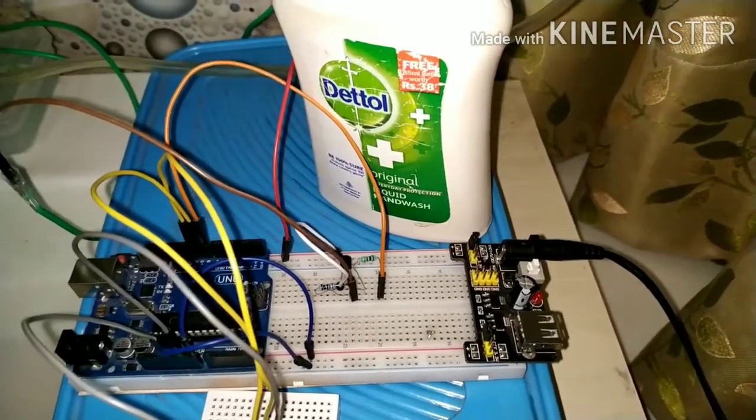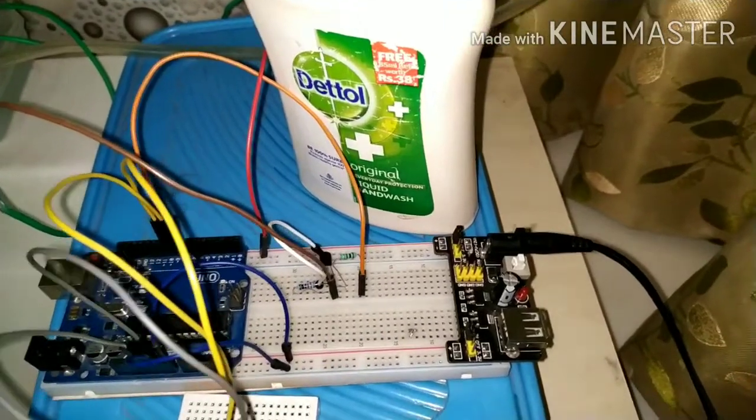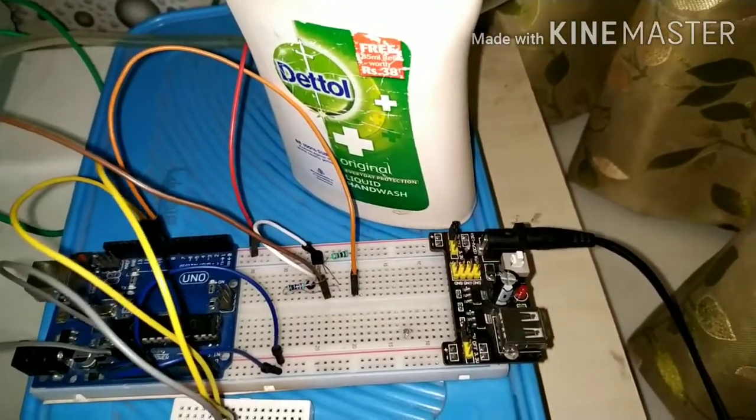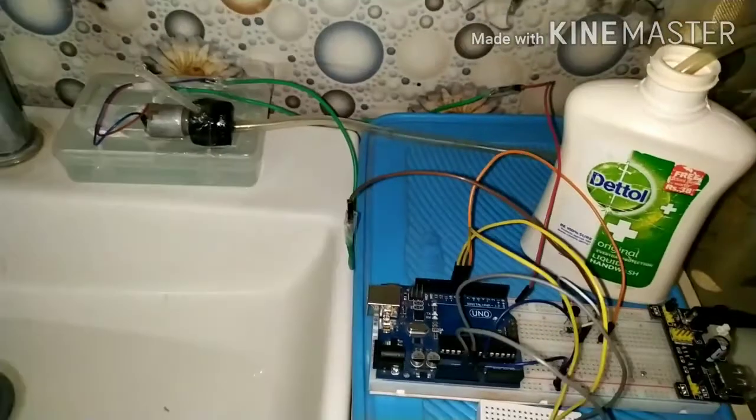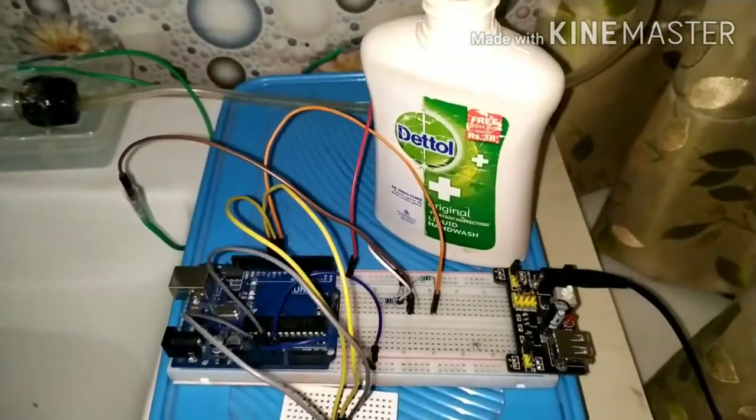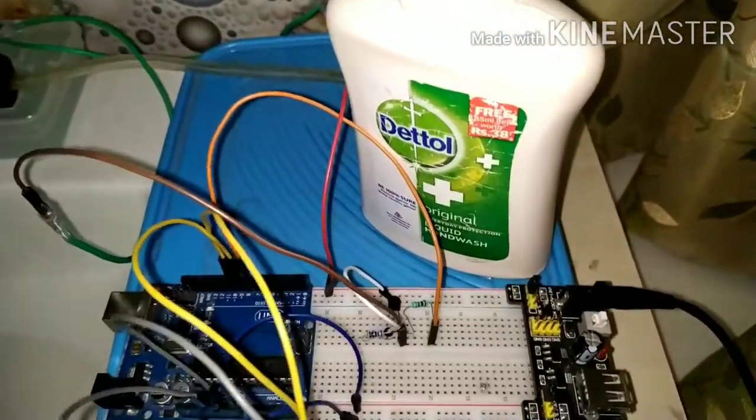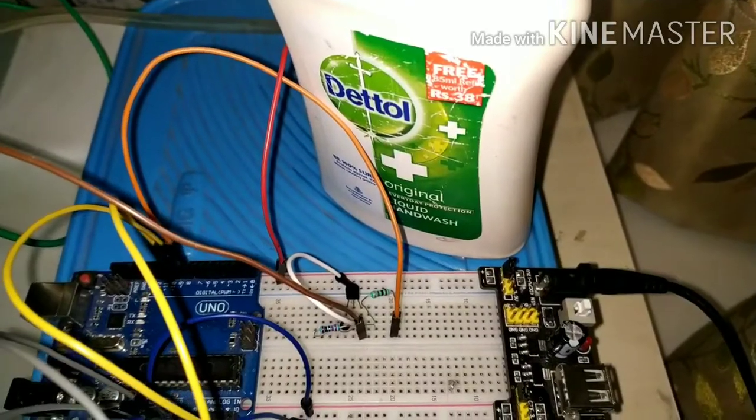And the collector to ground of the breadboard. And the emitter to motors plus or minus rail. Connect the other motor wire directly to the plus of the breadboard.